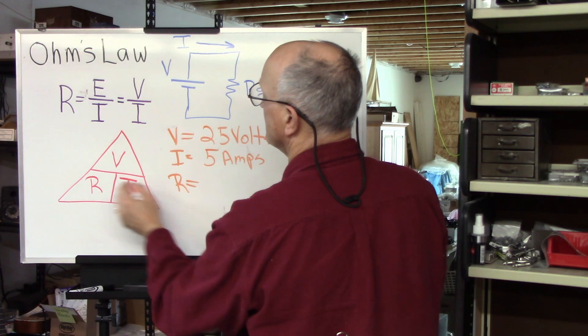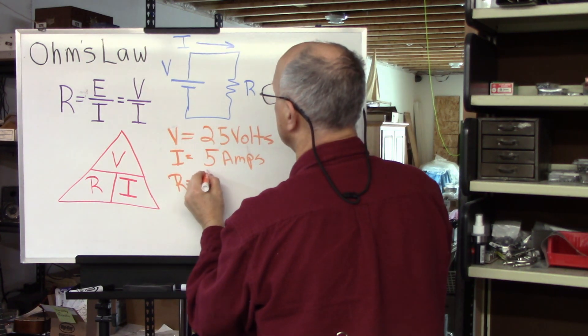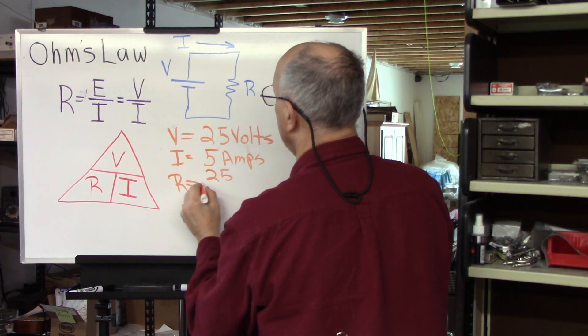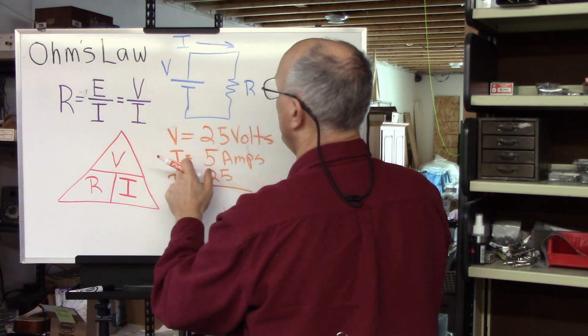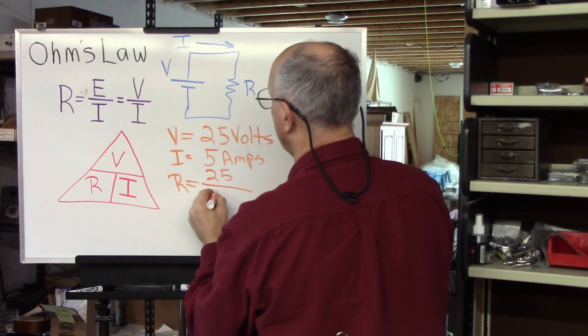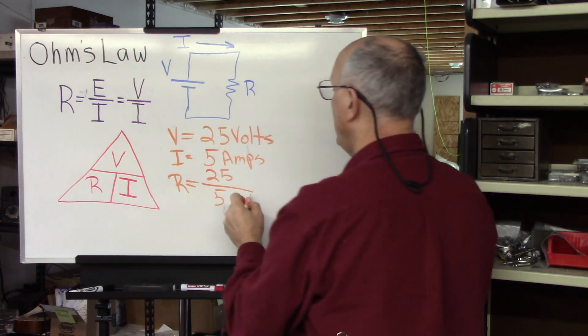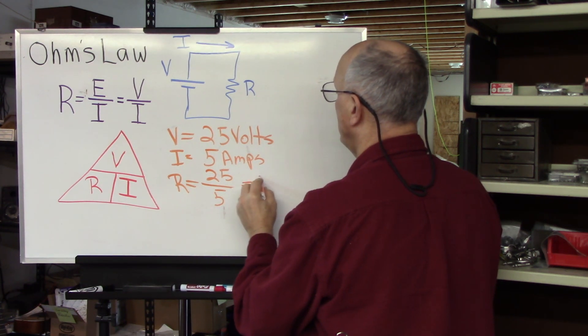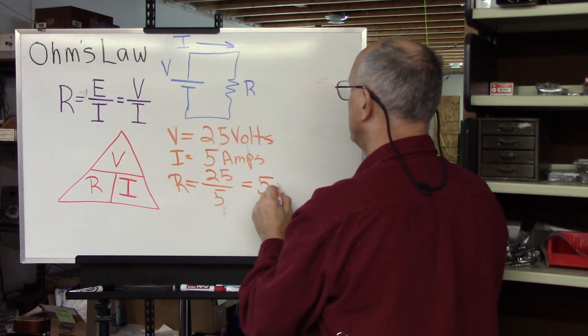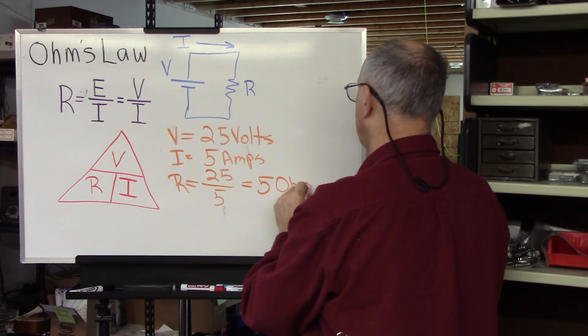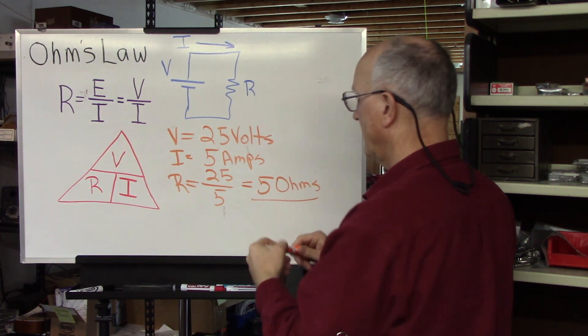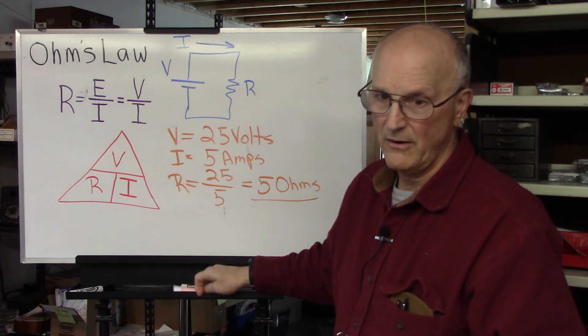We know that the resistance is equal to voltage in volts, which is 25, divided by the current in amps, which is 5. So we discover that the resistance is equal to 5 ohms.